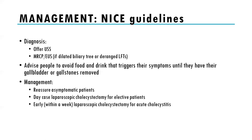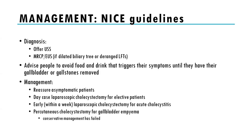Most hospitals run a 'hot gallbladder list' — a patient admitted with acute cholecystitis has their gallbladder removed within a couple of days of their index admission. Alternatively, a delayed cholecystectomy can be performed after six to eight weeks, where the patient is treated with antibiotics then booked onto an elective list. A percutaneous drain is used only if surgery is contraindicated due to patient fitness. If they are very unwell in ITU on organ support, drainage to get the patient better would be the way to go.